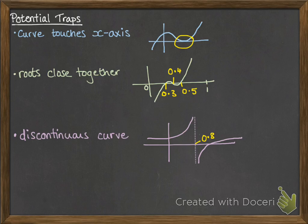But actually you can see that there isn't. There has been a change of sign but there isn't a root there. The curve doesn't go through the x-axis at that point. So it gives you a false root.